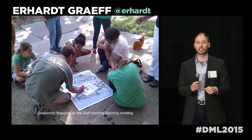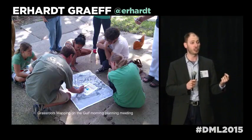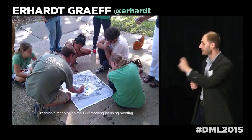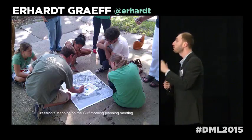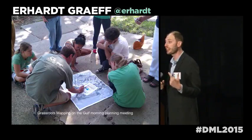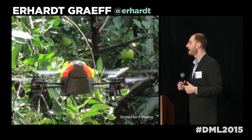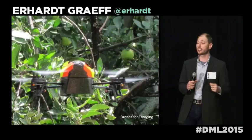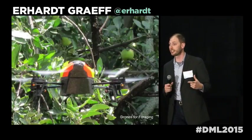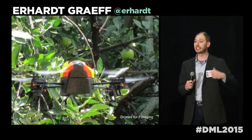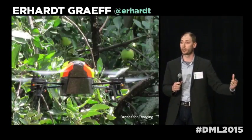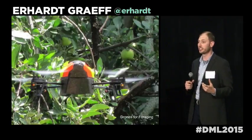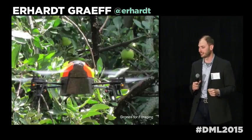Public Lab did this when they worked with community members in New Orleans who wanted to do that Gulf mapping — they're setting the goals, and they're the ones actually doing the mapping themselves. Another group out of Georgia Tech with Carl DeSalvo was working with foragers in Atlanta to see if drones could extend their work in their communities to grab fruit off trees that would otherwise not be used in the city.